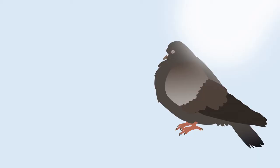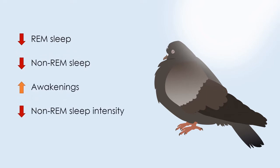Light at night disrupted every aspect of sleep that we measured. When the lights were on, pigeons lost four hours of sleep out of their usual ten. They had less REM sleep, less non-REM sleep, woke up more often, and their non-REM sleep was less intense.